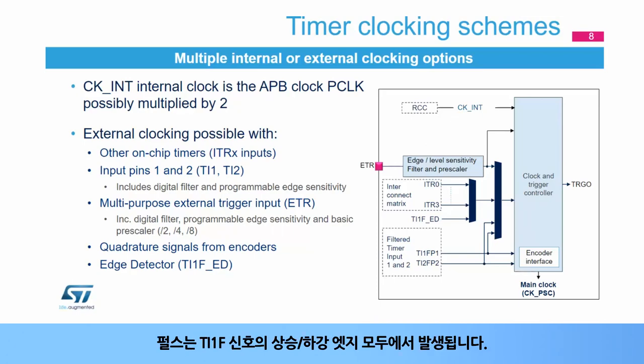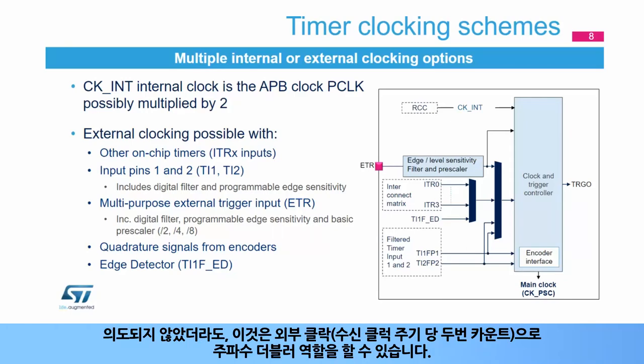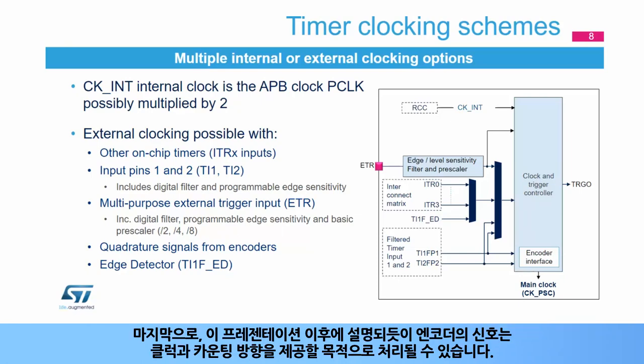External triggers can be generated by ADC watchdogs and comparators in addition to the ETR pin. The TI1-FED edge detector input can also be used as the timer clock. A pulse is generated on both rising and falling edges of the TI1-F signal, and it can serve as a frequency doubler with an external clock, counting twice per incoming clock period. Lastly, signals from an encoder can be processed to provide a clock and a counting direction.